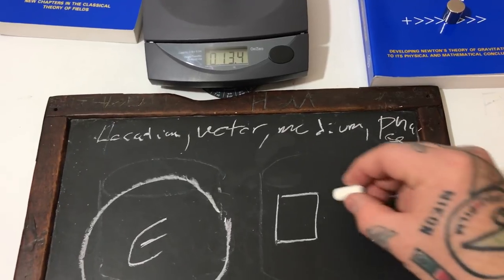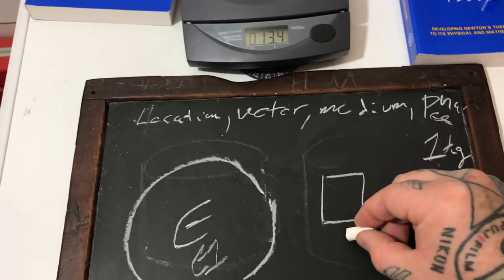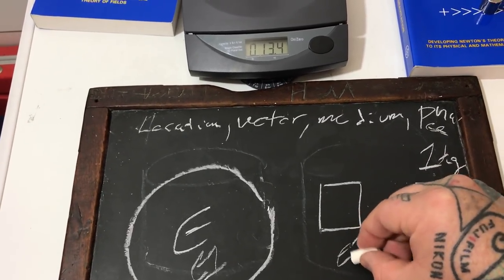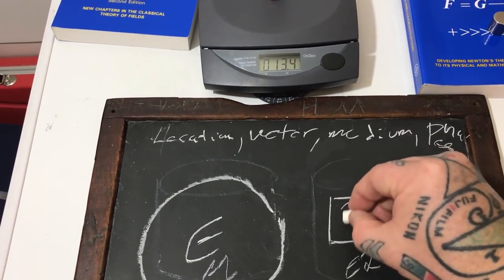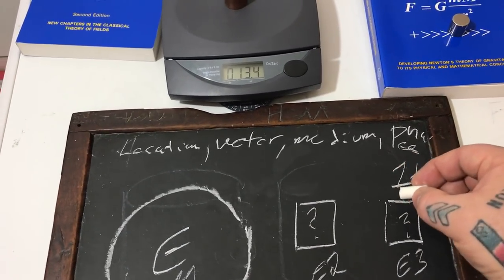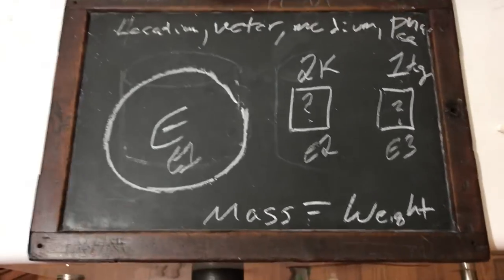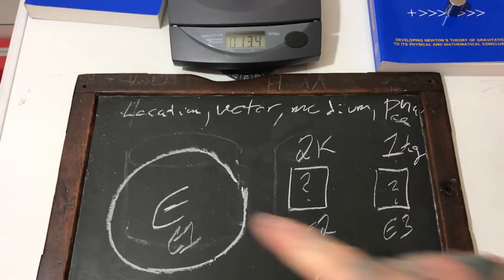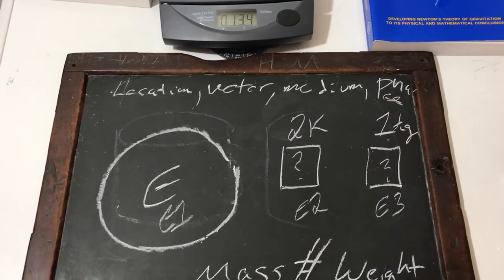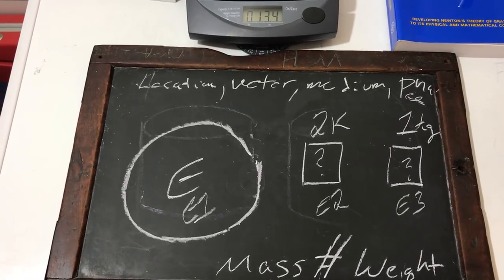If you actually take an object out in space relative to the Earth and it weighs one kilogram here, and you instantaneously change its distance closer to E1, we have E2, E3. Both of these are the same weight, right? You instantly change distance, go from one kilogram to two kilograms or three kilograms. So weight is not equal to mass. Weight is always location, vector, medium, and phase specific. Then weight is an irrelevancy only relational to location, vector, medium, and phase.